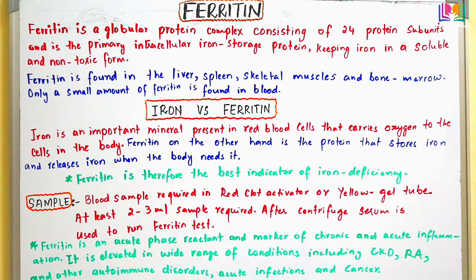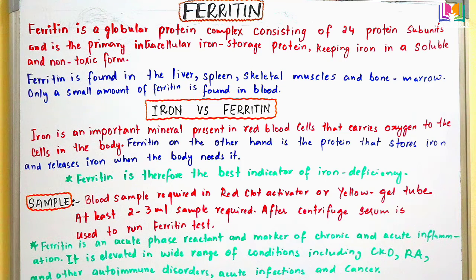Ferritin is found in the liver, spleen, skeletal muscle, and bone marrow, and a very small amount of ferritin is found in the blood. To summarize so far: ferritin by nature is a protein, primarily storing iron in a soluble and non-toxic form, and it is a globular protein complex consisting of 24 protein subunits.